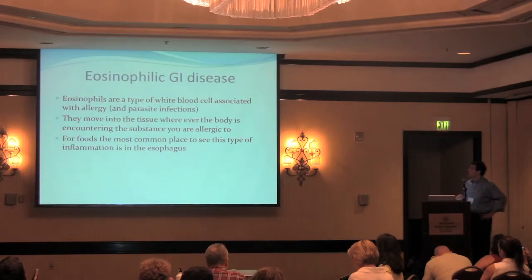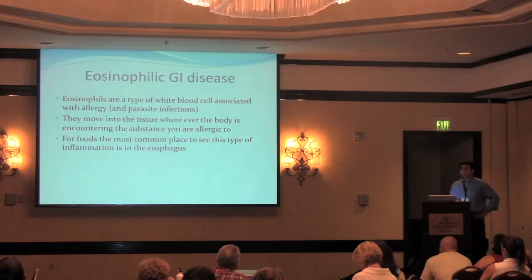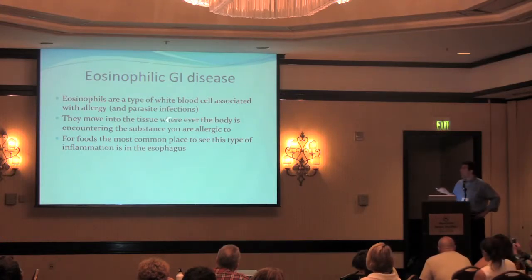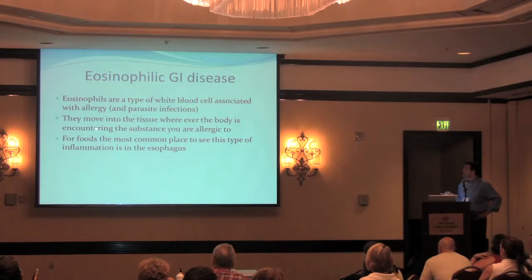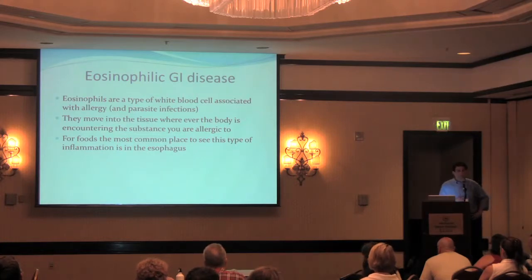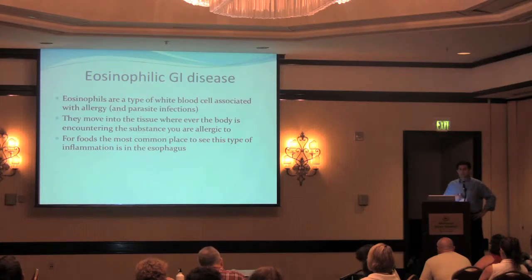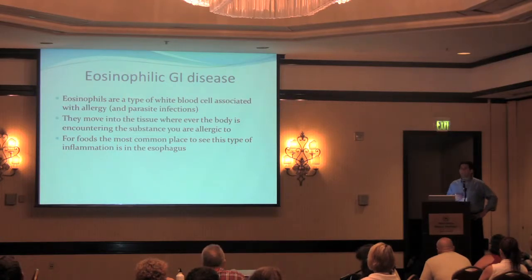Eosinophils are a type of white blood cell associated with allergic disease. They're also associated with parasitic infections, but we don't have a lot of those in the United States, so almost exclusively they're associated with allergy. Wherever your body is encountering a substance it's allergic to, these cells move into the tissue and cause inflammation. For foods, the most common place you see this type of inflammation is in the esophagus — the food pipe — because that's the part of the body with the highest exposure to food proteins before they've been acted on by acid and digestive enzymes in the stomach.